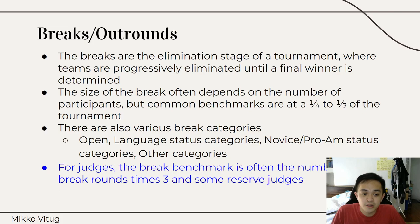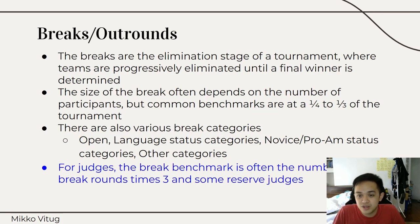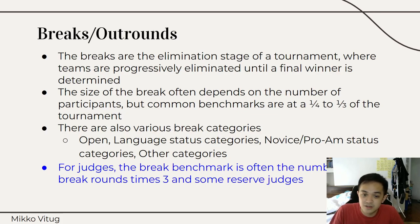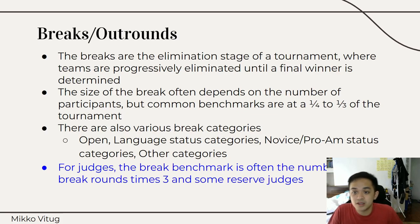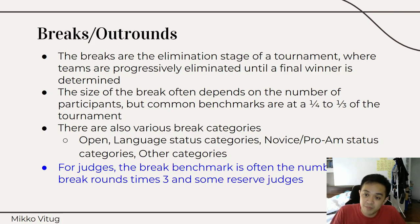For judges, the break benchmark is often the number of break rounds times 3, plus some reserve judges, just to ensure that the earliest break round will have at least 3 judges. This is not a very precise benchmark, because the judge pool can vary, the number of teams can vary, and you need a judge for the number of teams. But usually an adjcore determining this would want at least 3 judges for the first break round. For example, if it's a quarter-final with 4 rooms, you would need at least 12 judges — 3 in each room — and you might want to increase that in case some judges can't make it.